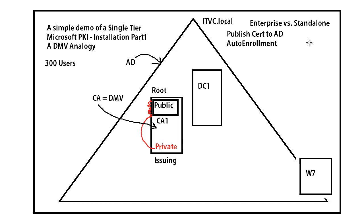With a standalone CA, it'd be like some guy who set up a brand new driver's license office in your city — he's new, he doesn't know who you are. When you come in to ask for that driver's license, he's going to need to see all your documentation, verify it, let you go home, call you back a few days later, and tell you to come pick it up. The enterprise CA already knows who you are because you're a member of Active Directory, so if configured correctly it has the ability to auto-enroll a certificate to you.